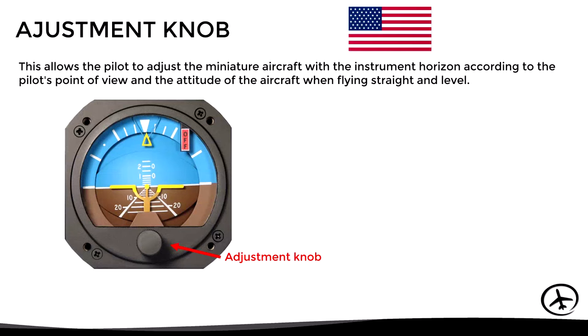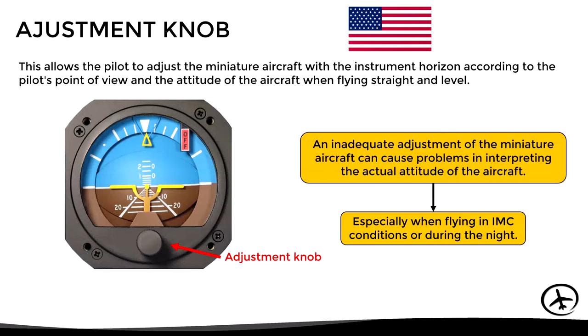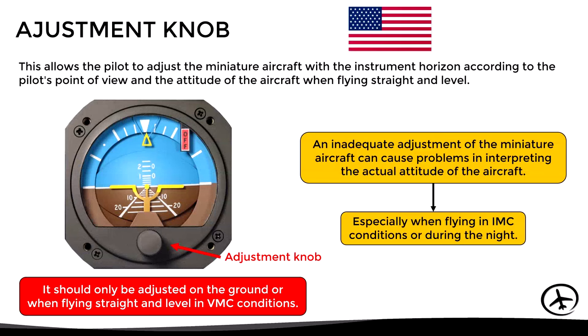However, a problem with this design is that an inadequate adjustment of the miniature aircraft can cause errors in the indication of actual attitude — especially when flying in IMC conditions or at night, where there are no visual references to confirm the aircraft's attitude. For these reasons, some civil aviation authorities have decided to prohibit or restrict the use of this adjustment knob. As a rule of thumb, the miniature aircraft should only be adjusted on the ground or when flying straight and level in VMC conditions.